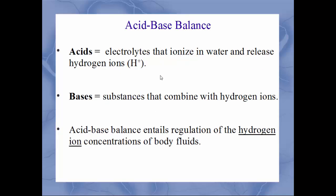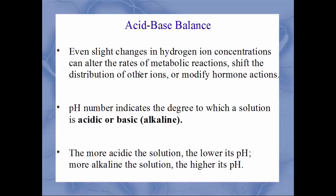Next we'll talk about acid-base balance. Acids are electrolytes that fully ionize in water and release hydrogen ions (H+). Bases are substances that combine with hydrogen ions. The key focus is hydrogen ion concentration, which controls the pH of body fluids. Even very slight changes in hydrogen ion concentration can have huge impacts — affecting rates of metabolic reactions, distribution of other ions, and even hormone actions.